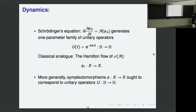Regarding dynamics: on the quantum side one has Schrödinger's equation, and when all goes well one has a unitary group of operators. The classical analog is the Hamiltonian flow. The general expectation relating the two as H-bar tends to zero is that symplectomorphisms ought to correspond to unitary operators.